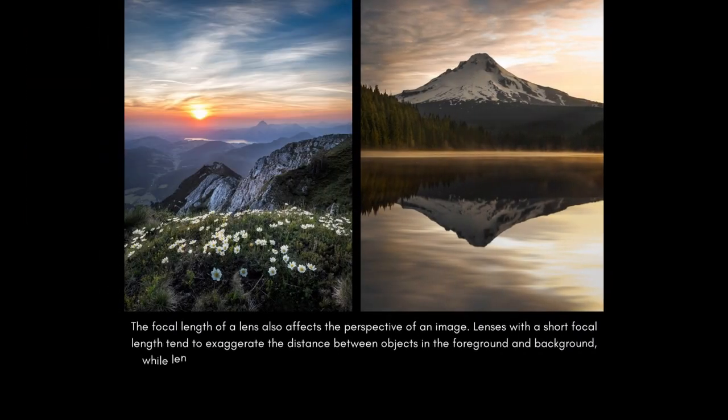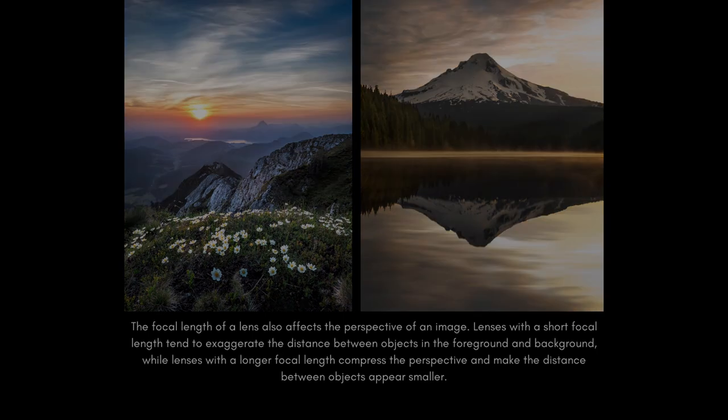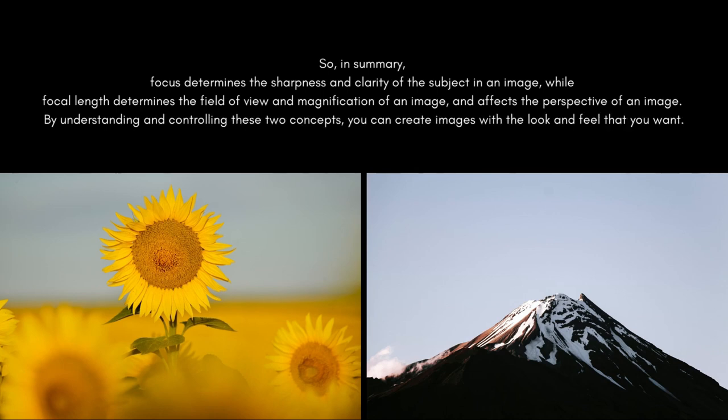The focal length of a lens also affects the perspective of an image. Lenses with a short focal length tend to exaggerate the distance between objects in the foreground and background, while lenses with a longer focal length compress the perspective and make the distance between objects appear smaller.